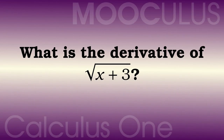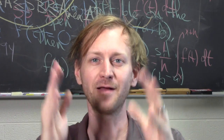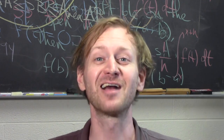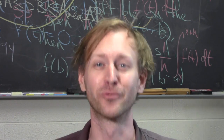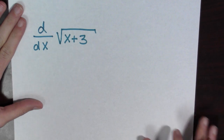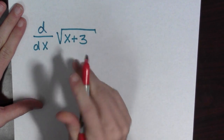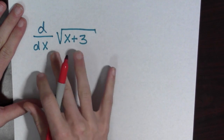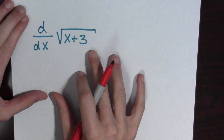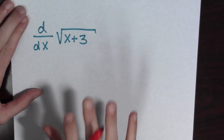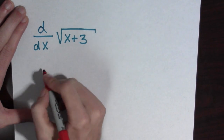Calculus. Hello there! Let's compute a derivative involving a square root. So we want to compute the derivative d over dx of the square root of x plus 3. To do this, we're going to use the limit definition of the derivative.